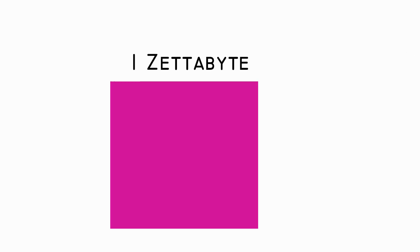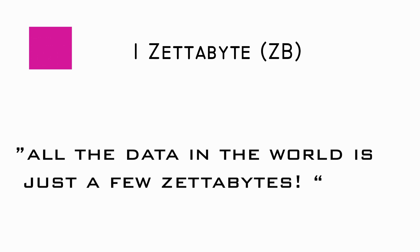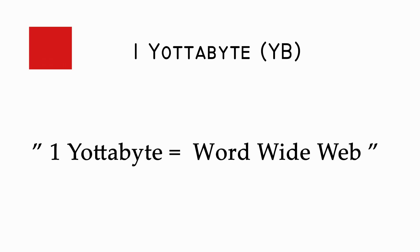After exabyte comes zettabyte. Zettabyte is used to measure very large amounts of data, and all the data in the world is just a few zettabytes. After zettabytes comes yottabyte. It is a very large number that humans can evaluate. One yottabyte is enough space for the entire worldwide web.